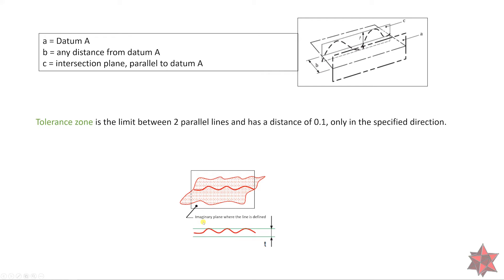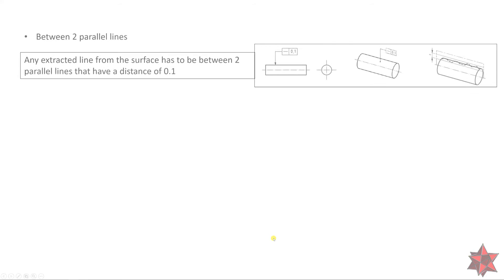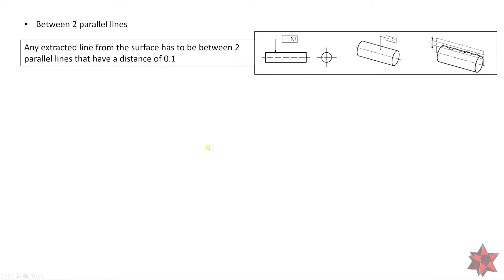We can see here the imaginary plane where the line is defined on the surface, and we can see the tolerance. Any extracted line from the surface has to be between two parallel lines that have a distance of 0.1.